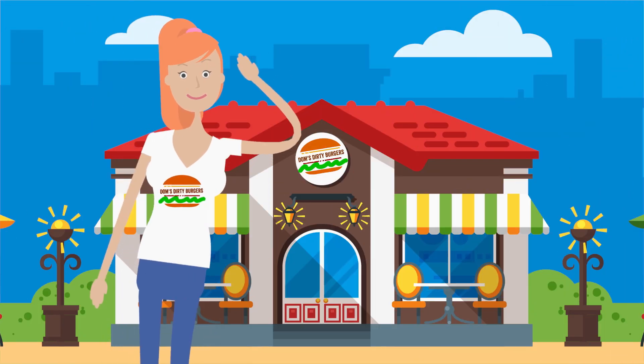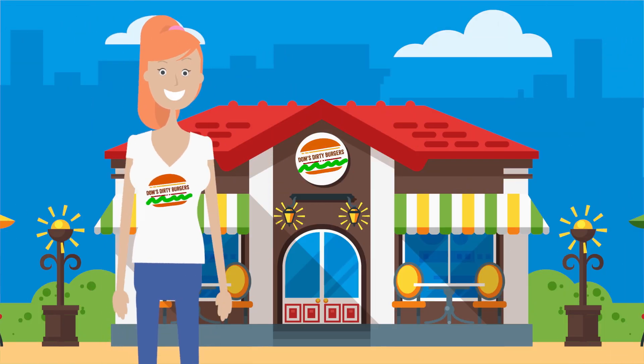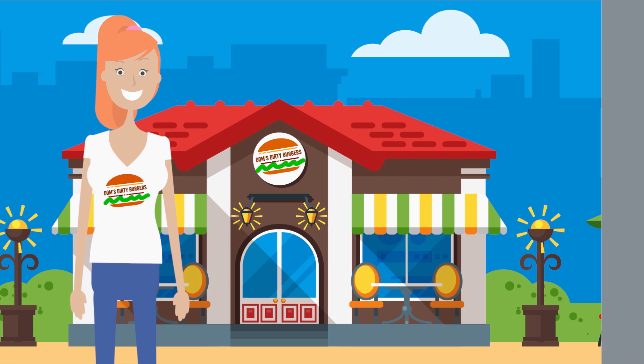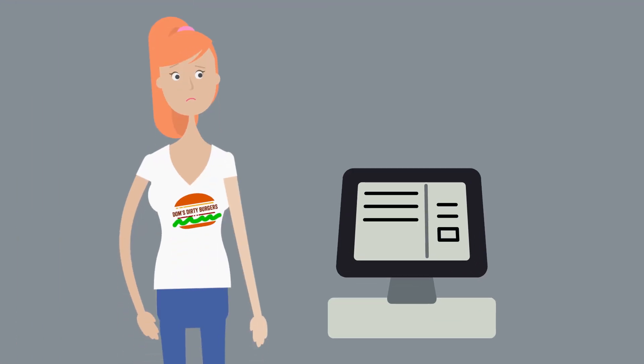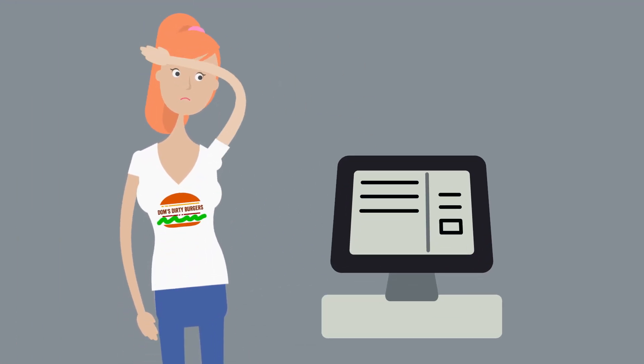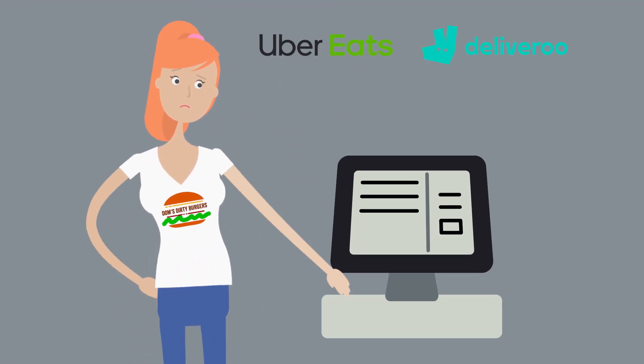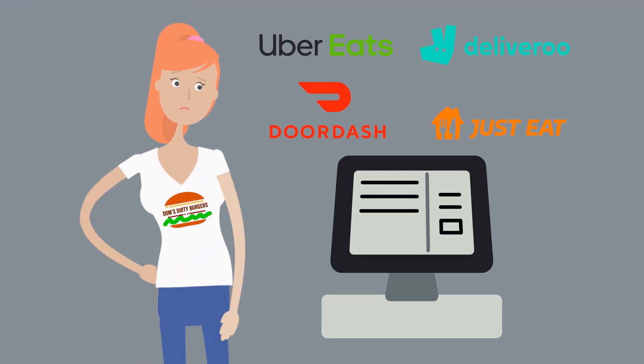Kate is the store manager at one of Dom's Dirty Burgers stores. It's dinner service and there are dozens of Uber Eats, Deliveroo, DoorDash and Just Eats orders coming in. Kate is having trouble managing this and serving customers at the same time, as each delivery order needs to be entered into the EPOS to go through to the KDS for preparation.